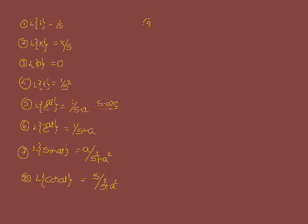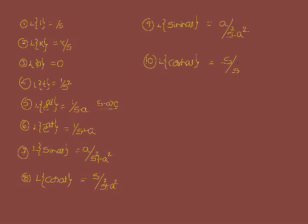Laplace of hyperbolic sin at — since it is sin, the numerator is a, but for hyperbolic functions the denominator is s square minus a square, compared to s square plus a square for the regular trig functions. Similarly, Laplace of hyperbolic cos at is s by s square minus a square. For hyperbolic functions, the denominator is always minus.